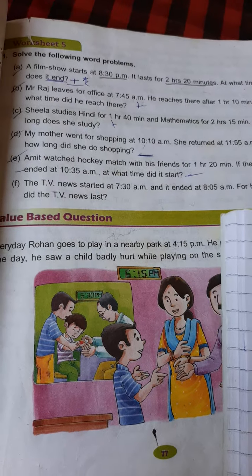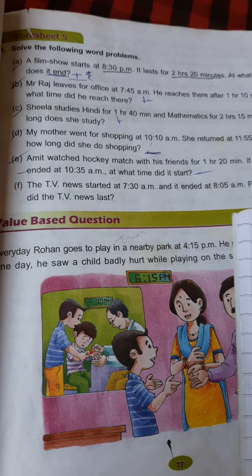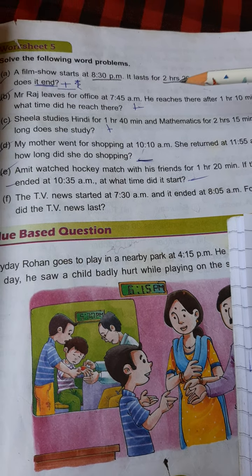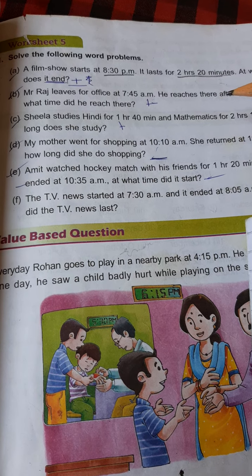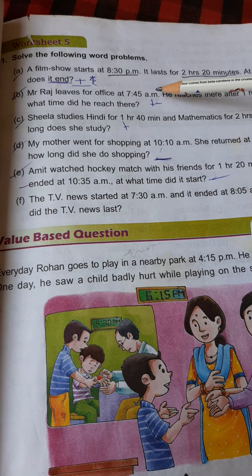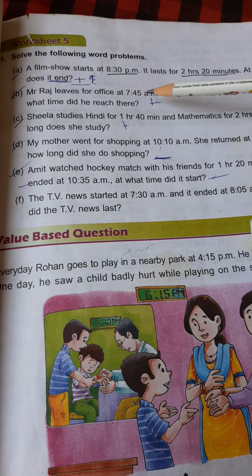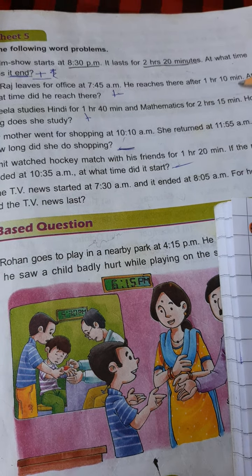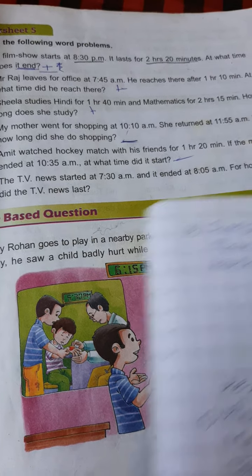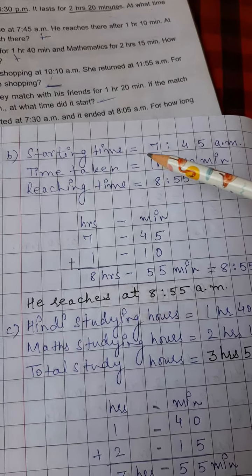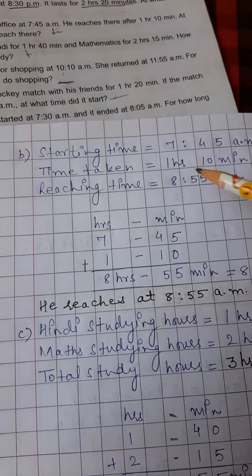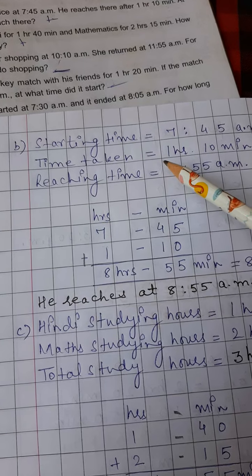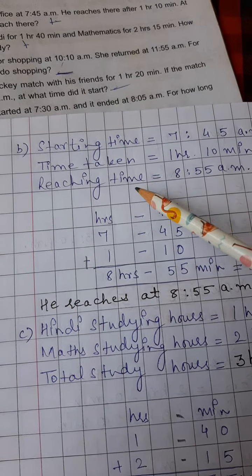Coming on to the second question, Mr. Raj leaves for office at 7.45am. He reaches there after 1 hour, 10 minutes. What time did he reach there? So in this question also, students, look at the time when Mr. Raj leaves for office, that is 7.45am, means 7 hours 45 minutes. And the duration is 1 hour, 10 minutes. So what we are going to do? We will write the starting time, that is 7.45am. Mr. Raj leaves for office at 7.45am, time taken for him to reach is 1 hour, 10 minutes. So to find out the reaching time, we have to add 1 hour to 7.45.